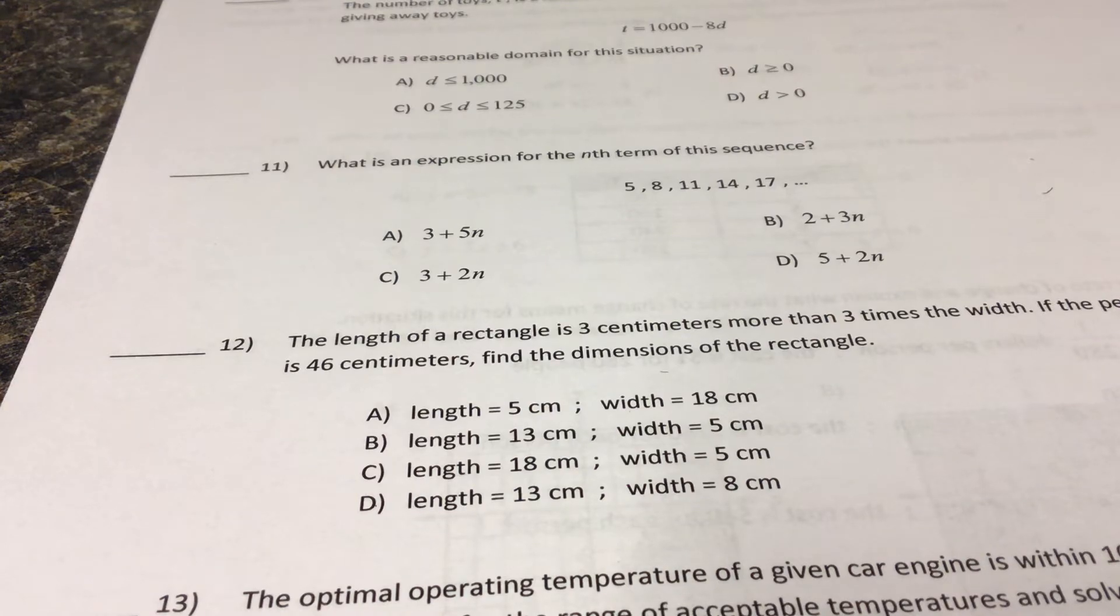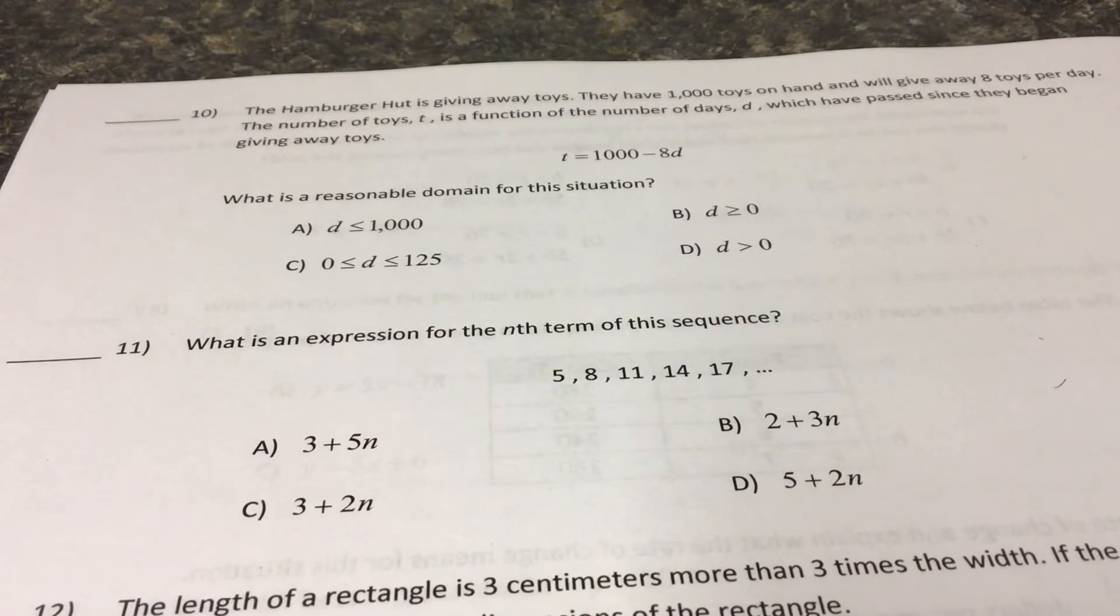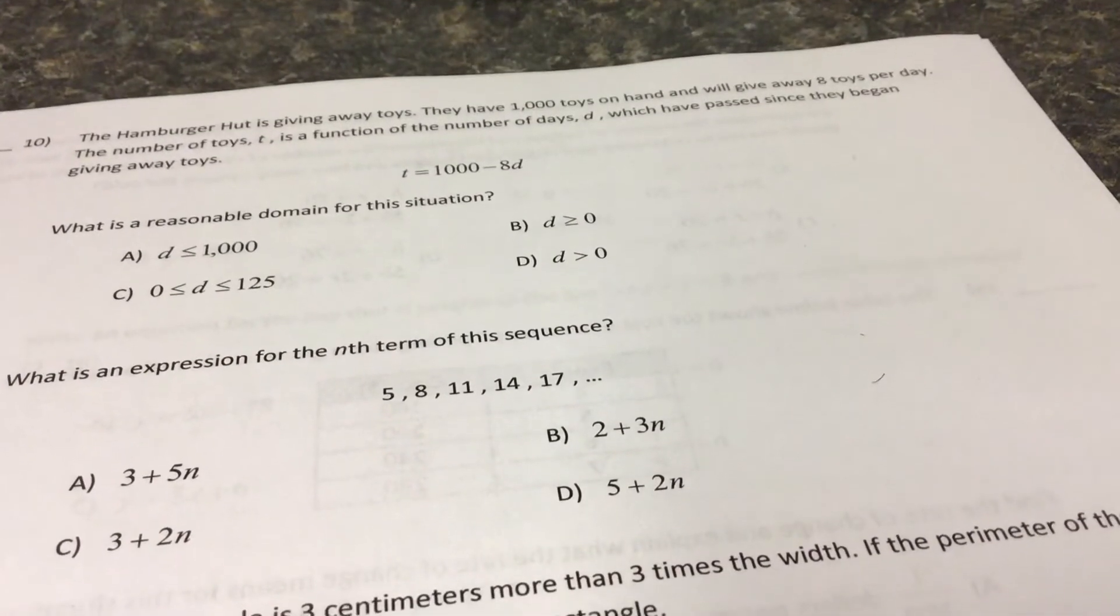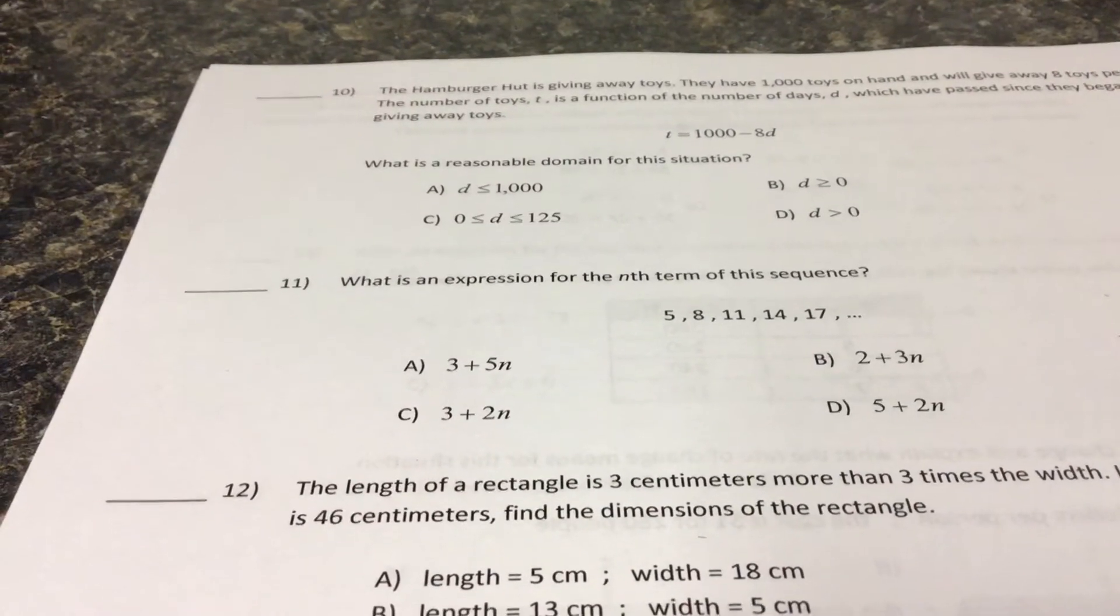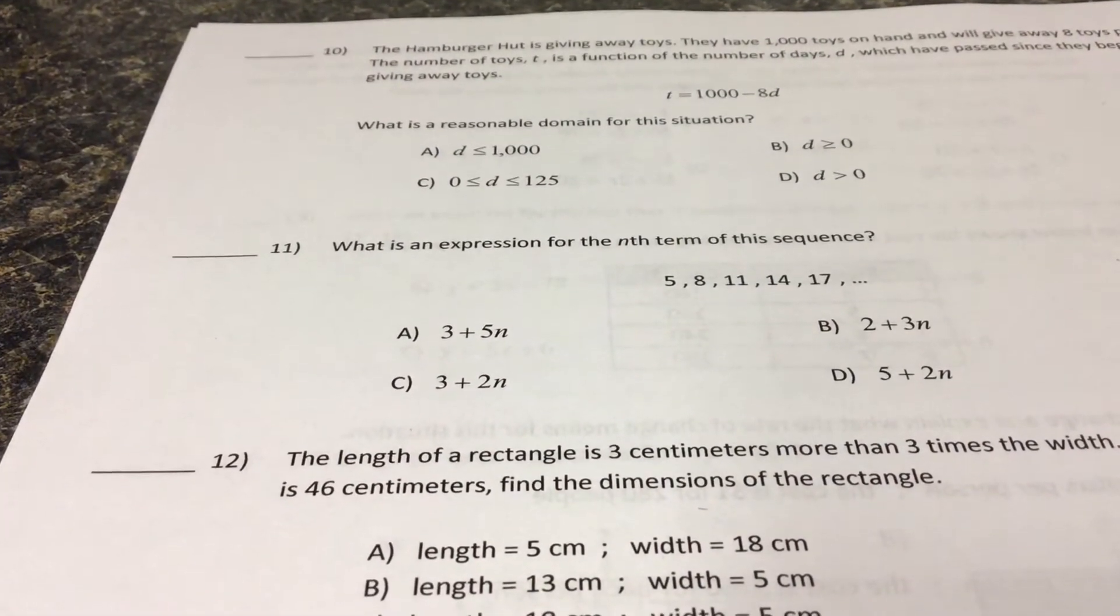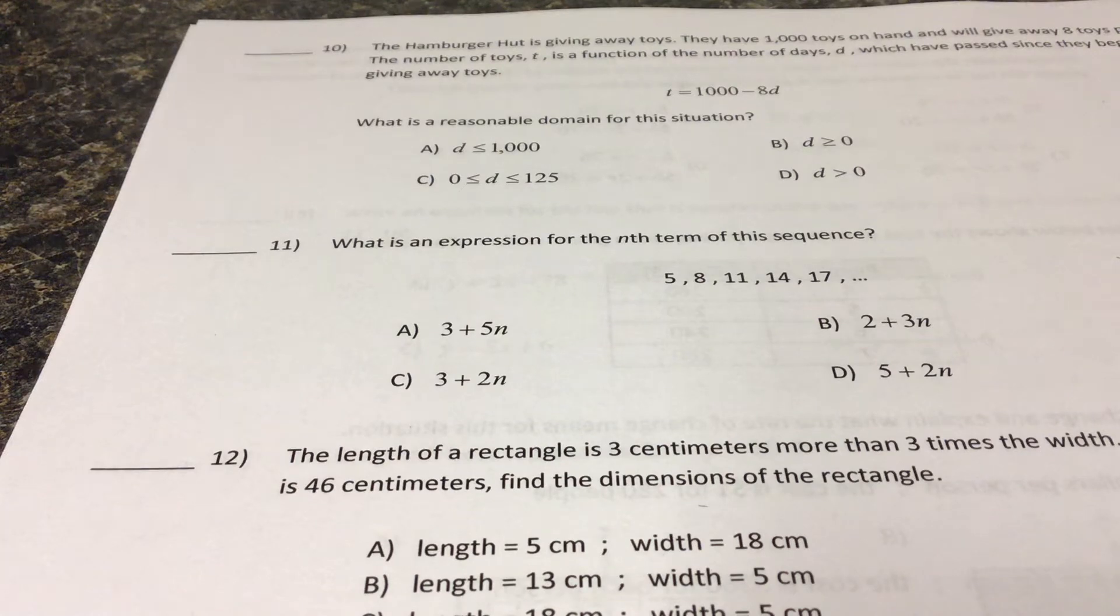So our first question here, number 10, says the Hamburger Hut is giving away toys. They have a thousand toys on hand and will give eight toys away per day. The number of toys, t, is a function of the number of days which have passed since the beginning of giving away toys.